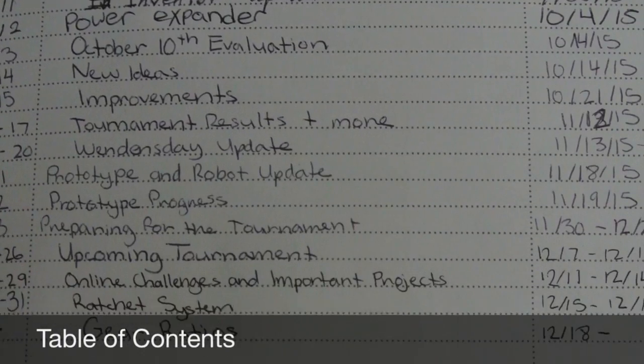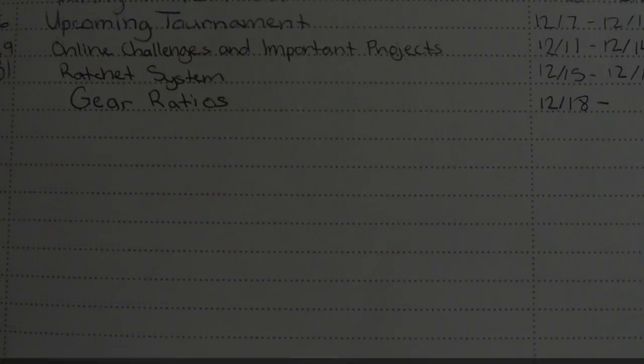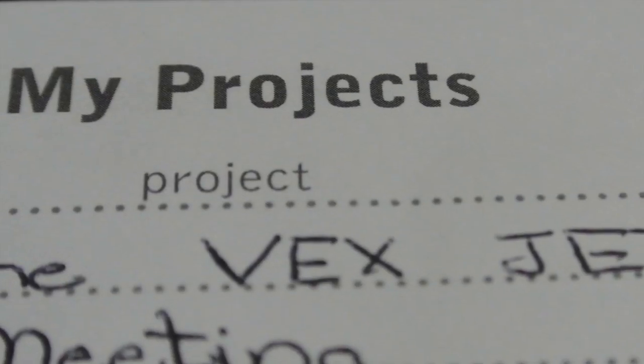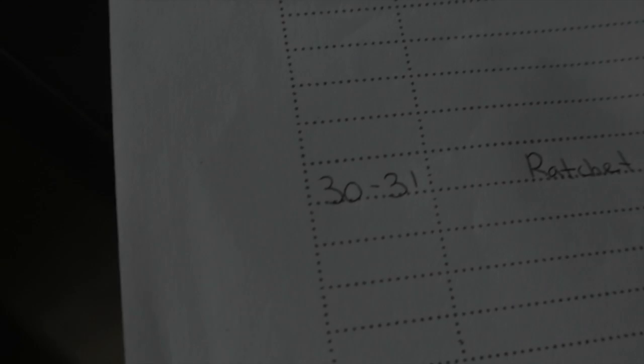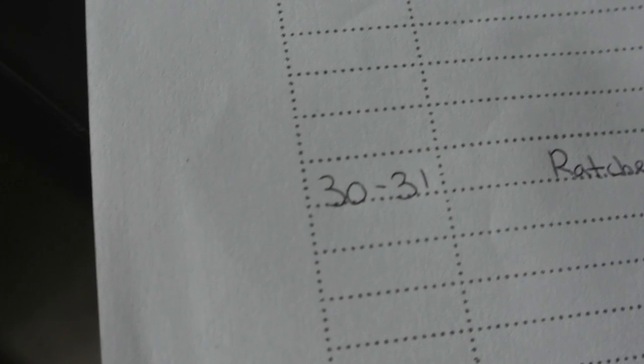Next is the table of contents. The three sections to cover for each entry in these pages is the page number, project name, and date. As you've taken account of, there is only 78 spaces but 130 pages in the engineering notebook. Some projects will have to be multi-page so that when recording it, it takes up only one line. Keep in mind to never fill out the table of contents until the whole project is complete.